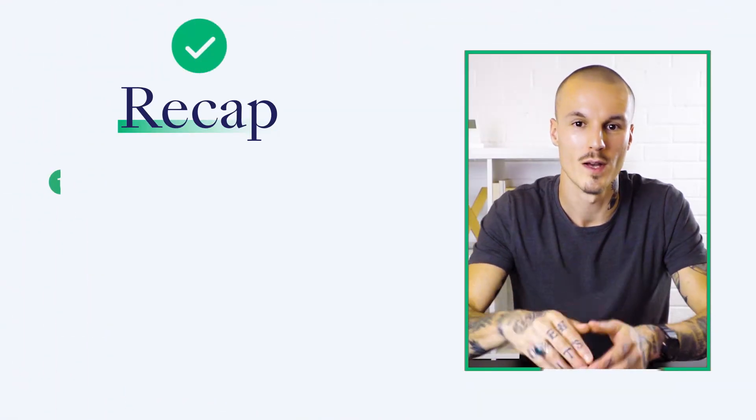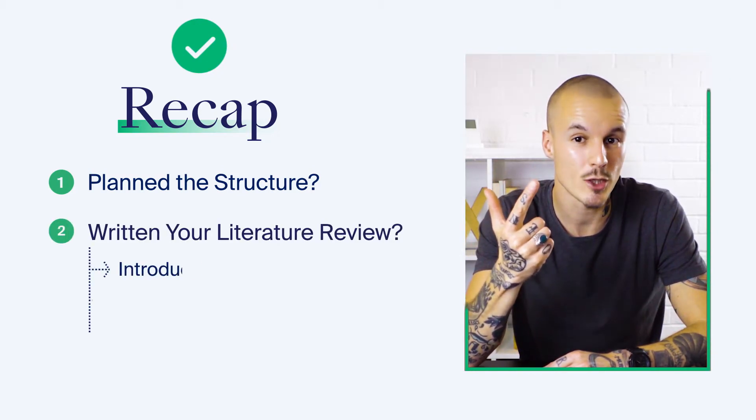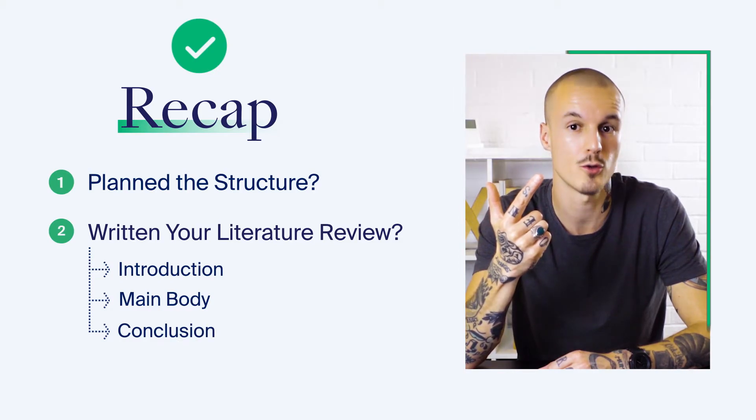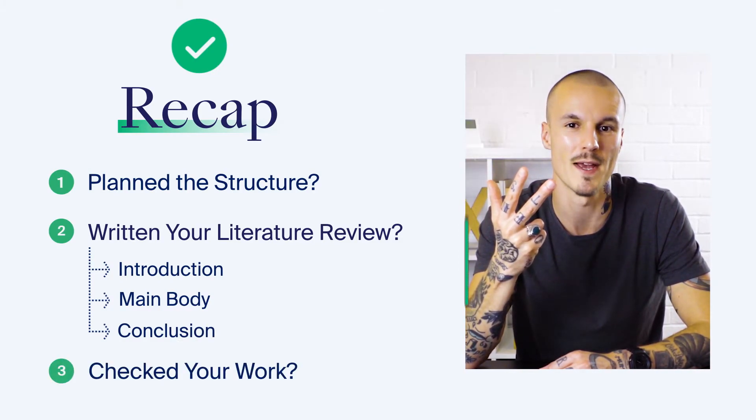Before we finish, let's double check that we've covered everything with a quick recap. Have you selected a structure for organising your literature review? Written an introduction, main body and conclusion, and finally checked your literature review ready to submit? Now you have three clear steps for writing a high level literature review to strengthen your research. Don't forget I've put a link in the description to a handy template which you can use when writing your literature review.